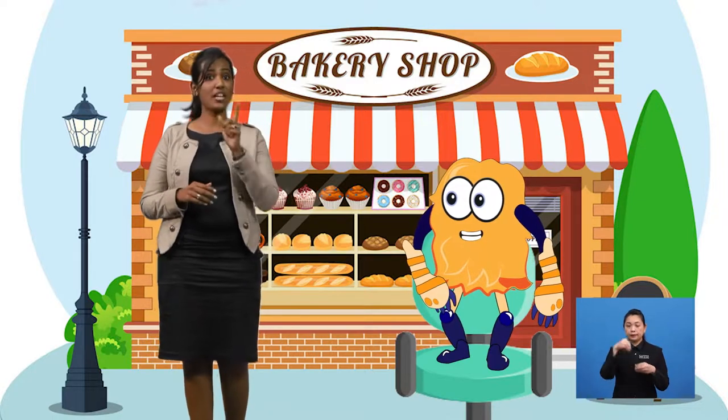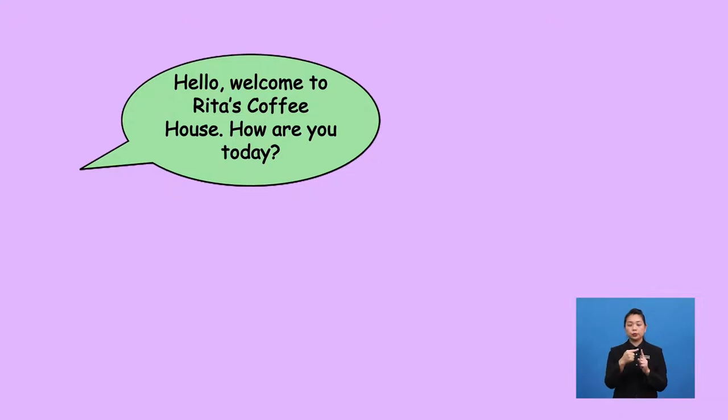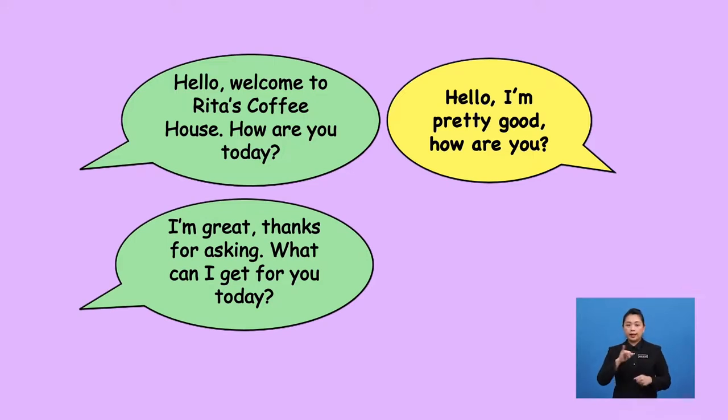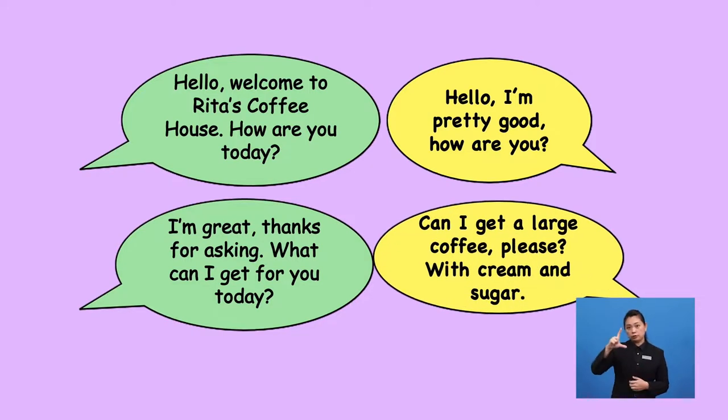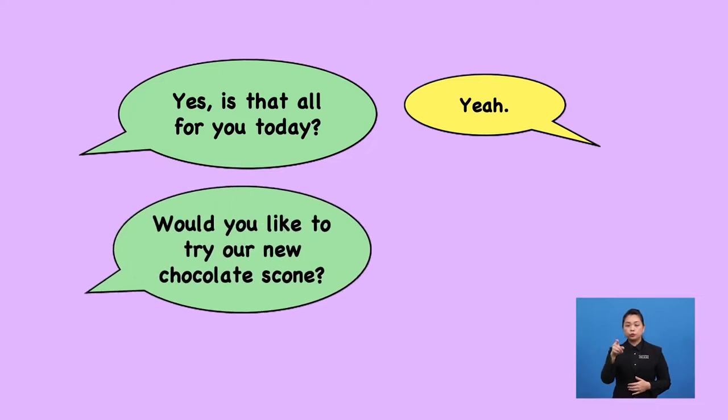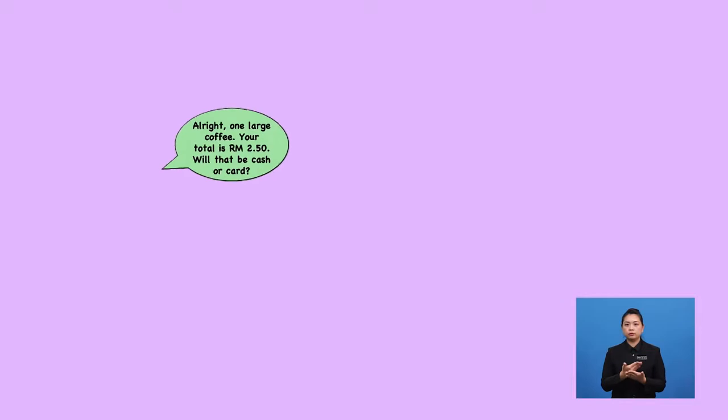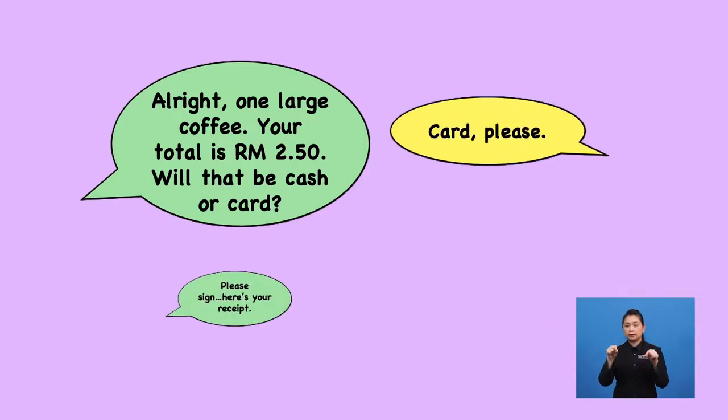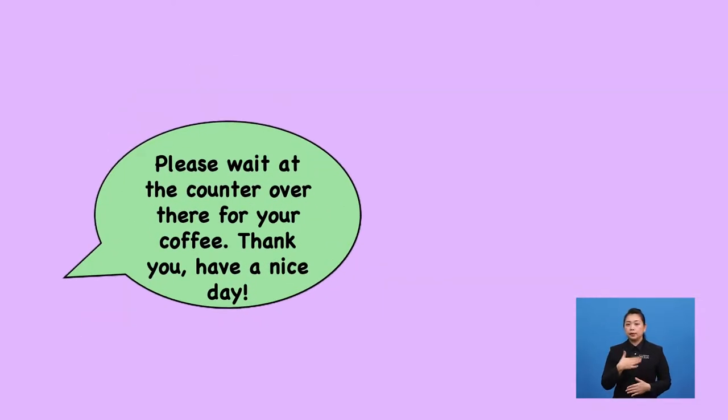Bravo, YOLO. Now that we have learned about ordering food, could you try putting them together in one simple conversation that you can put to practice? Hello. Welcome to the Rita's Coffee House. How are you today? Hello. I'm pretty good. How are you? I'm great. Thanks for asking. What can I get for you today? Can I get a larger coffee, please? With a cream and sugar? Yes. Is that all for you today? Yeah. Would you like to try our new chocolate scone? No, thank you. Alright. One large coffee. Your total is RM2.50. Will that be a cash or card? Card, please. Please sign, here's your receipt. Thank you. Please wait at your counter over there for your coffee. Thank you. Have a nice day. Thank you, you too.